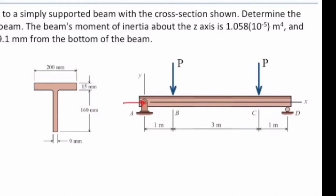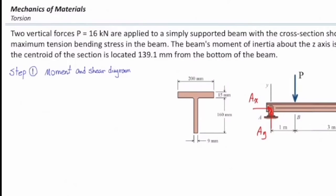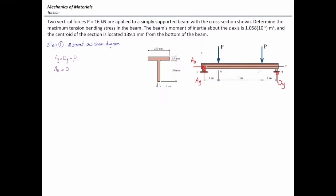There are two reaction forces at pin A — we call them AY and AX — and there is one reaction force at D, which we call DY. Because the problem is symmetric, it is clear that each support receives half of the total force. So AY is equal to DY is equal to P, and because there is no force in the X direction, AX is zero.